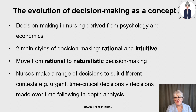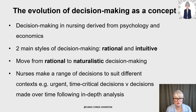For those doing assignments on decision making or interested in the theory, I'm going to start with a brief overview of the evolution of decision making as a concept. Decision making is derived from two fields — psychology and economics. The literature talks of two main styles: rational decision making and more intuitive decision making processes.